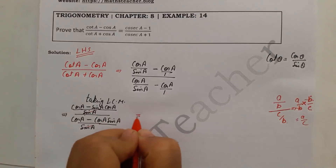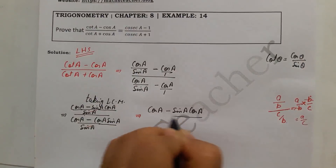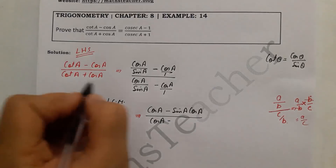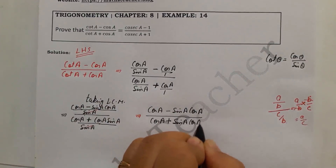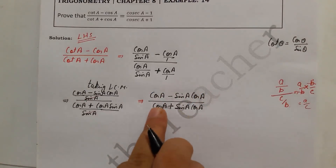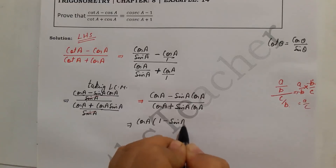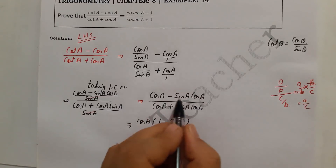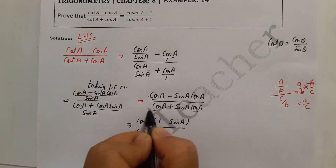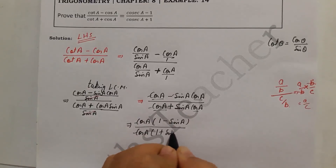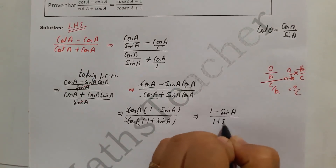This implies: cos A minus sin A cos A divided by cos A plus sin A cos A. Here cos A is common, so we factor it out. Taking cos A common in the numerator gives 1 minus sin A, and taking cos A common in the denominator gives 1 plus sin A. The cos A cancels, leaving us with 1 minus sin A divided by 1 plus sin A.